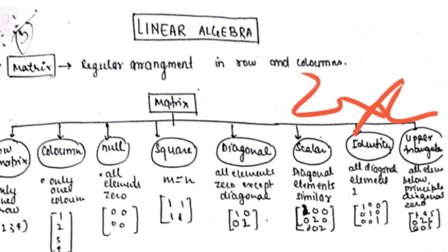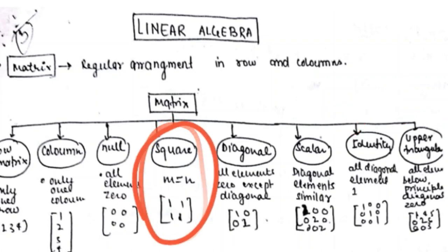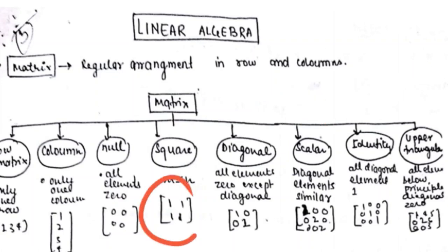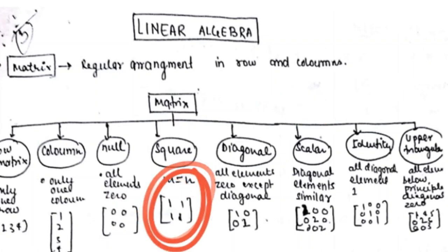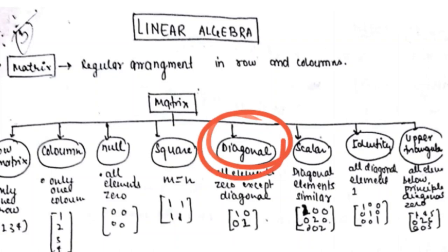A square matrix is one where m is equal to n — that is, the number of rows and number of columns are the same. That is the square matrix.